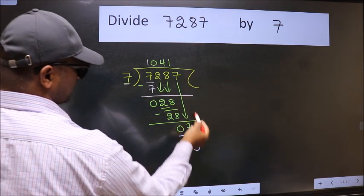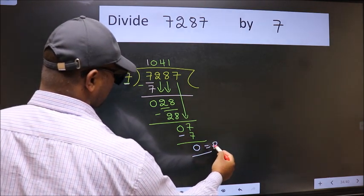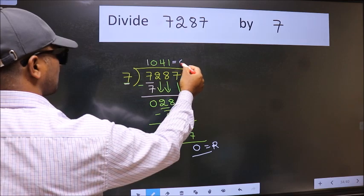No more numbers to bring it down. So we stop here. This is our remainder and this is our quotient.